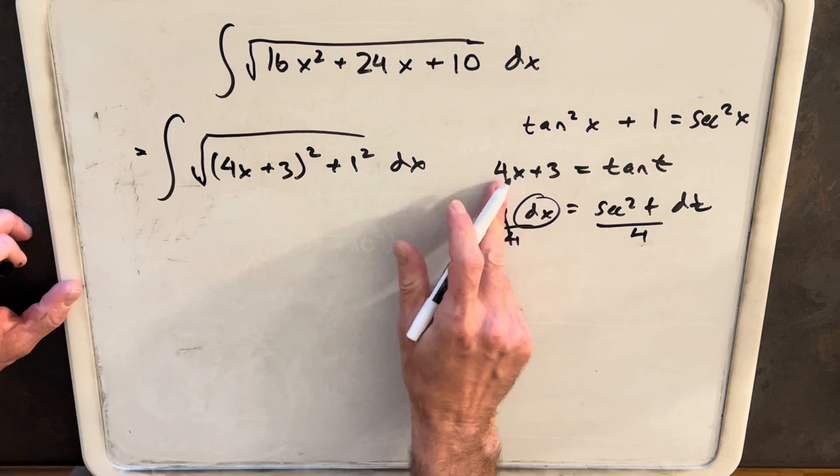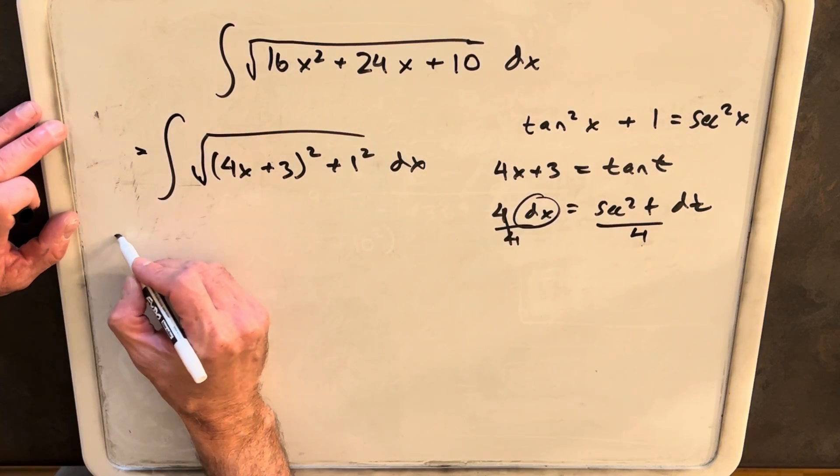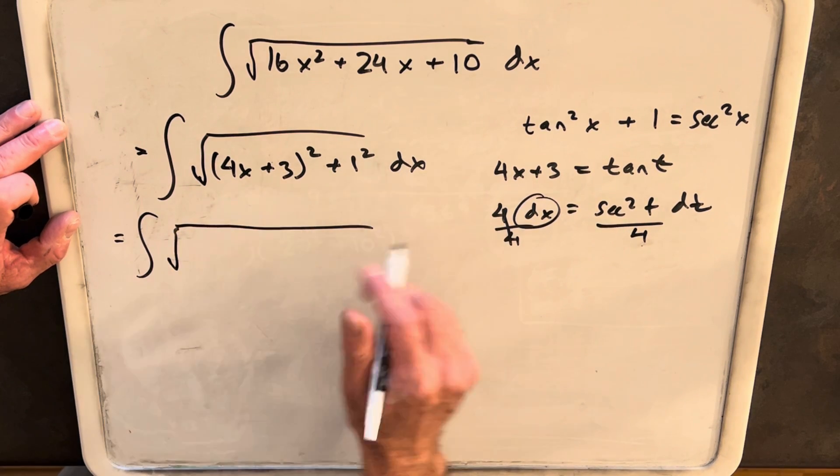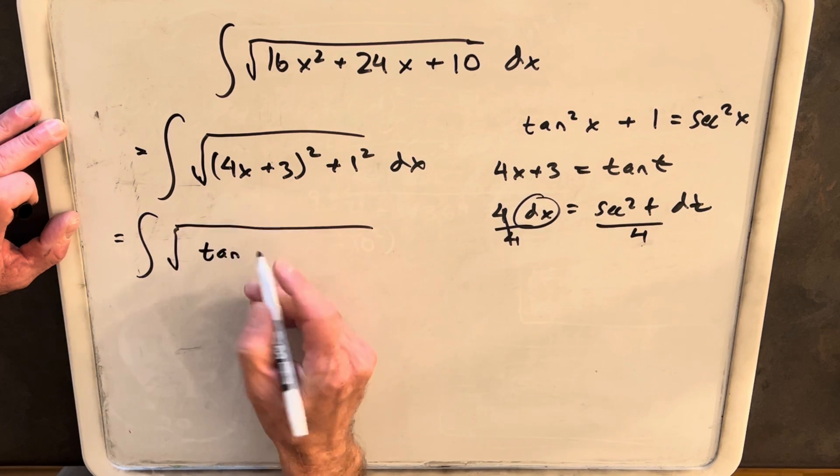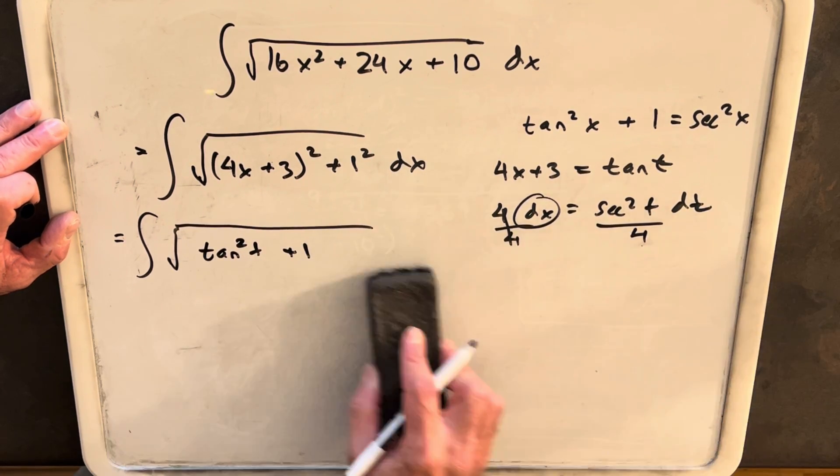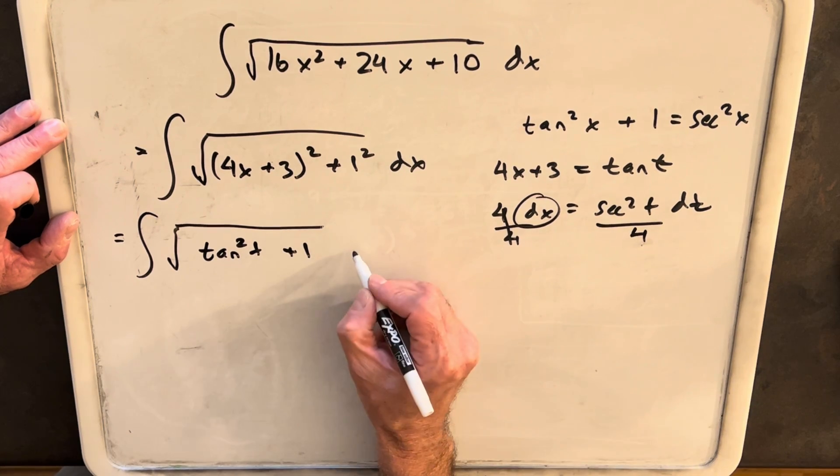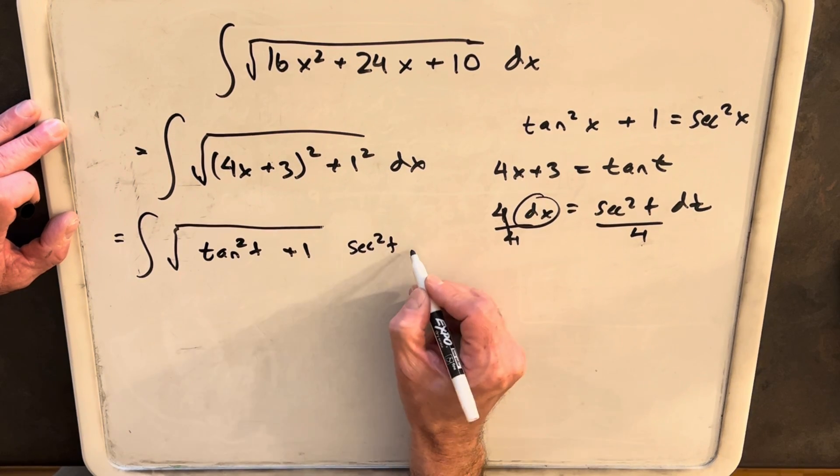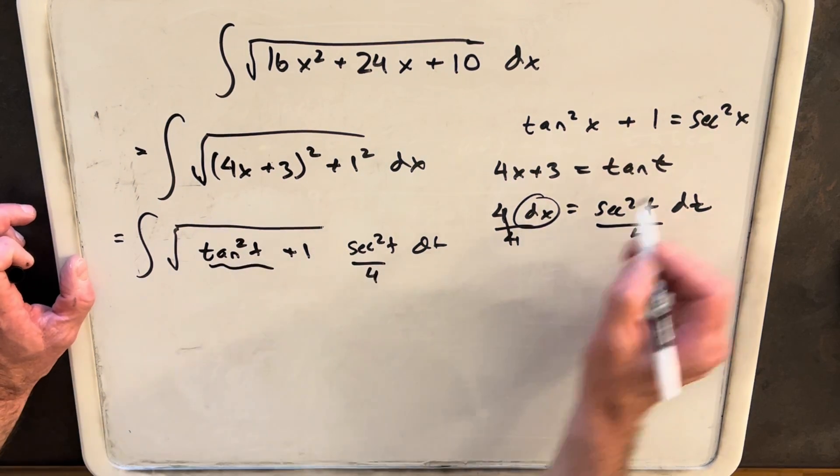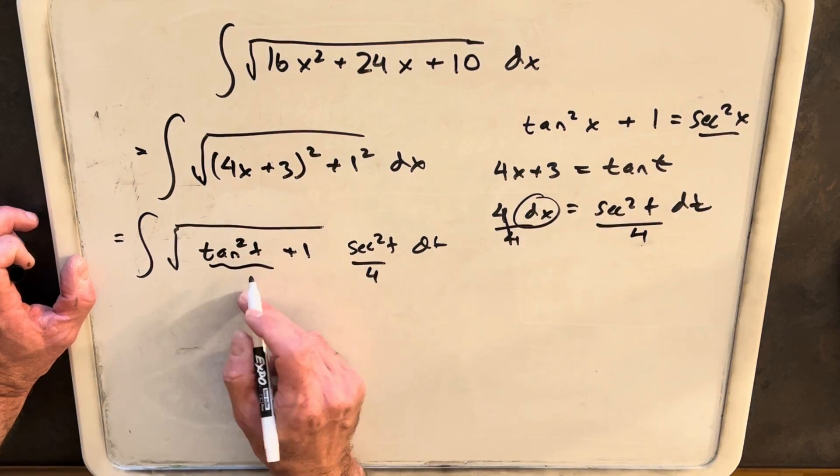Then plugging these values in, plugging in for 4x plus 3 and dx, we'll rewrite this. And we're going to have our square root, 4x plus 3 is tan squared t plus 1, and then our dx part is just going to be secant squared t dt over 4. But then we have an identity we just did here. We have this as secant squared.